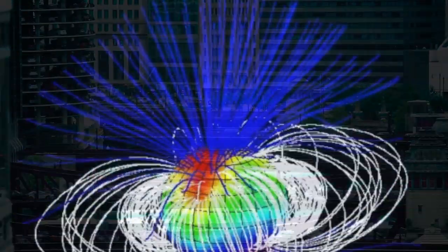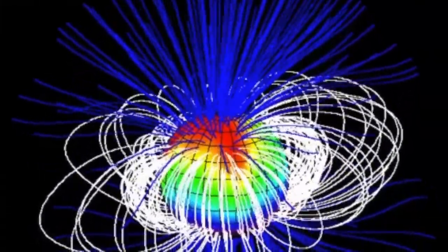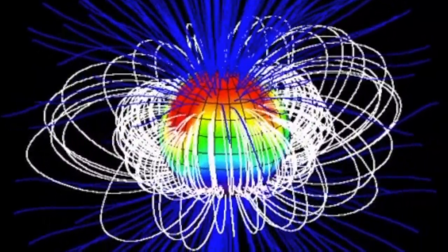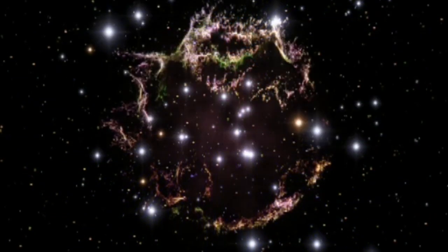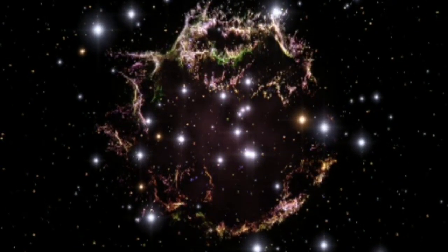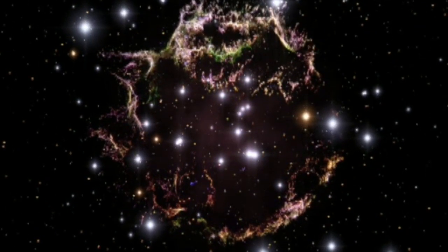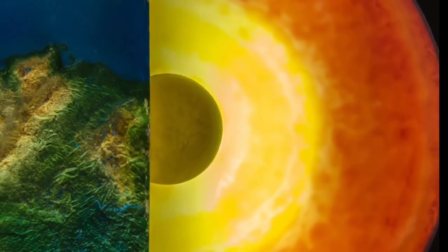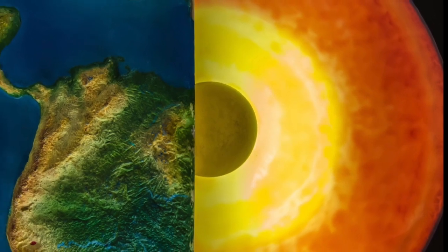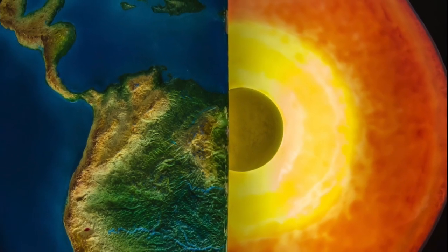Without this magnetic field, we probably wouldn't be here. It deflects charged particles from the sun and protects the ozone layer. That protects us from harmful UV radiation. We also think it has protected us from cosmic rays that come from supernova in the past. So, the Earth's core and the movement happening in it seems to be our friend. But how much do we really know about it?